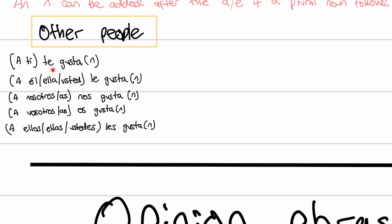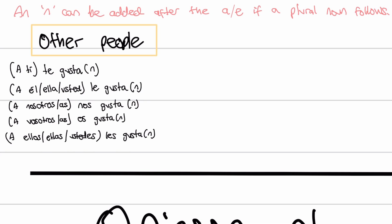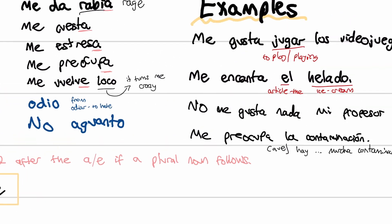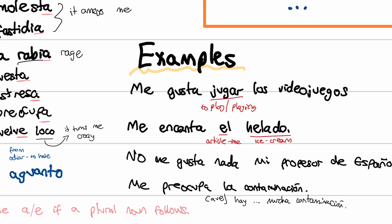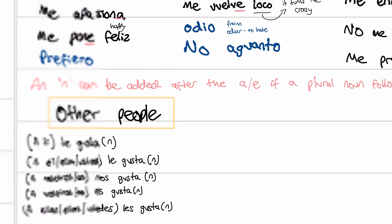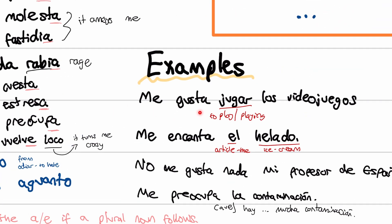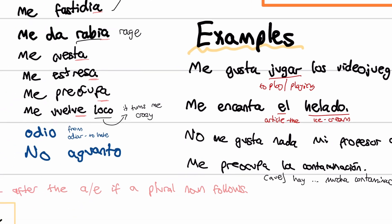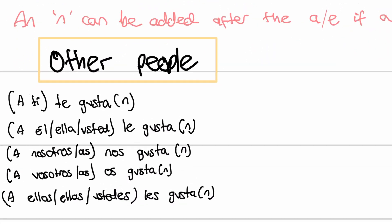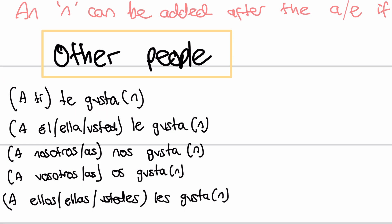I've written all of these up now. So we have te gusta, le gusta, nos gusta, os gusta, and les gusta. All of these can be gustan as well if it's plural. At the start table it says a ti, a él, or a nosotros — that's a way of emphasising who likes something. For example, a mí me gusta jugar los videojuegos. Or you can just have me gusta. Similarly, a ti te gusta jugar los videojuegos or just te gusta jugar los videojuegos — the a ti bit is just emphasising 'to me', 'to you'. That's why I put it in brackets.